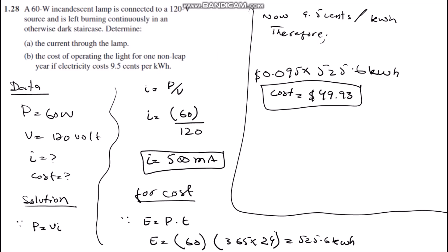Hello everyone, today we are going to solve question number 1.28. The question is: a 60 watt incandescent lamp is connected to a 120 volt source and is left burning continuously in an otherwise dark staircase. We have to determine the current and the cost of electricity for the incandescent bulb for a year.